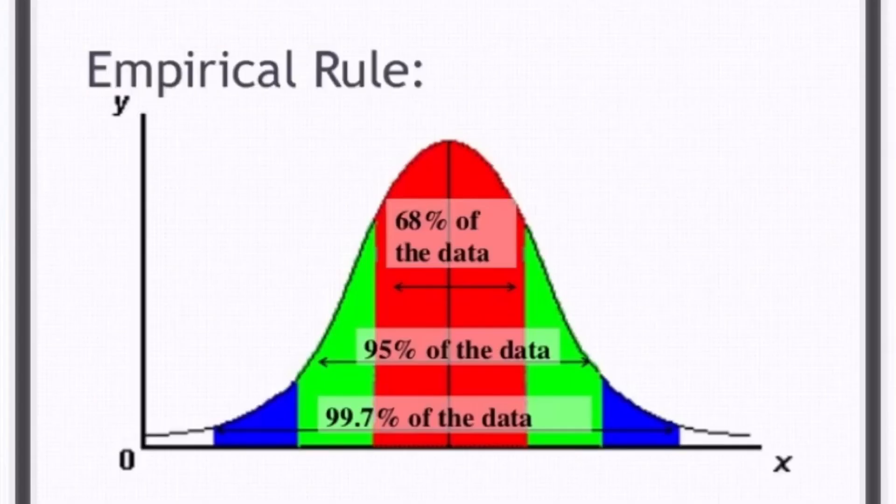Next feature is empirical rule which says 68% of the data falls under one standard deviation of the mean, 95% of the data falls within second standard deviation, and 99.7% of the data falls within the third standard deviation of the mean.